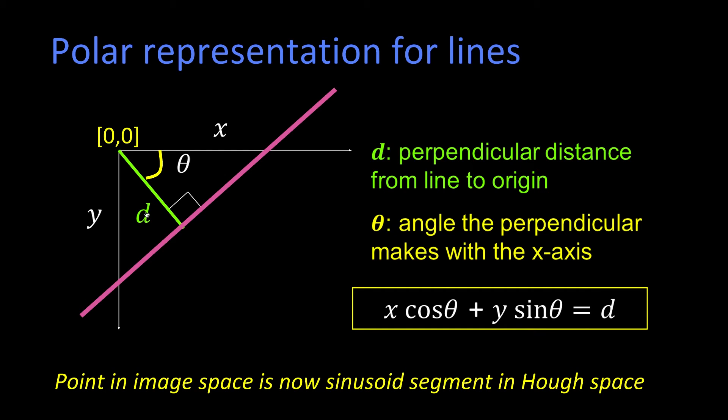One of the interesting things is if you take a look at this equation—if I know x and y, what I have left in terms of d and theta is a sinusoid. Which is why we say that a point in image space is now a sinusoid in Hough space, and we'll see an example of that in a minute.